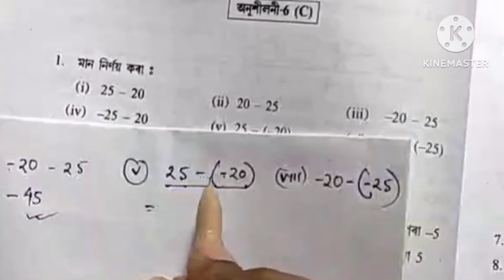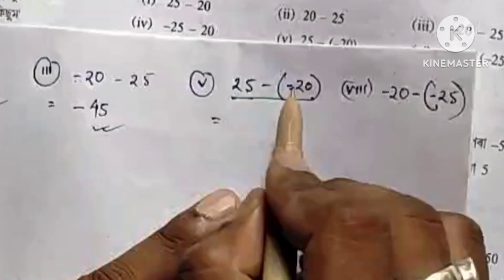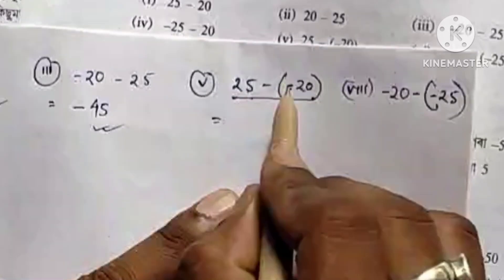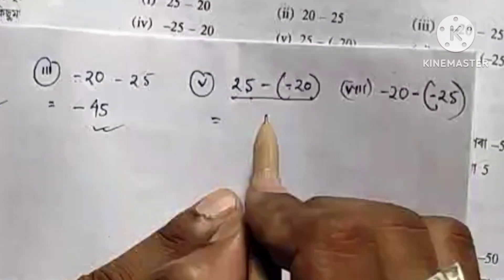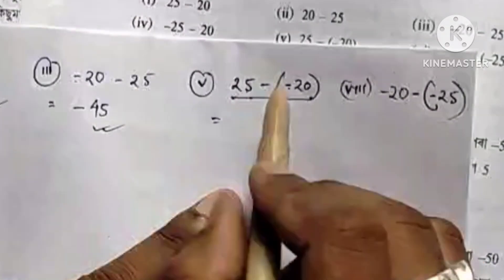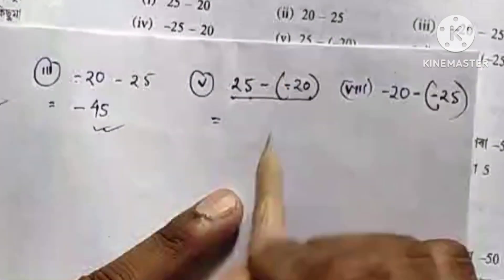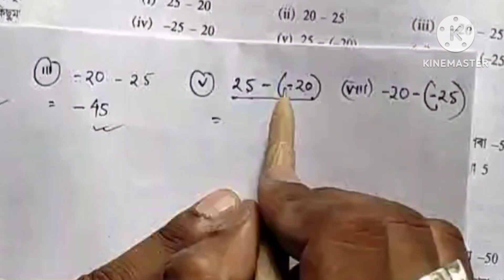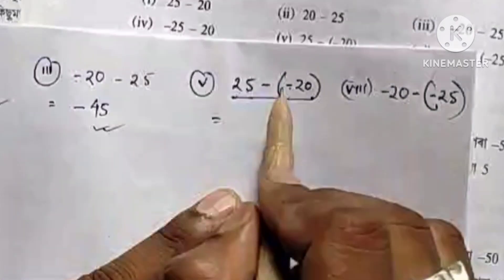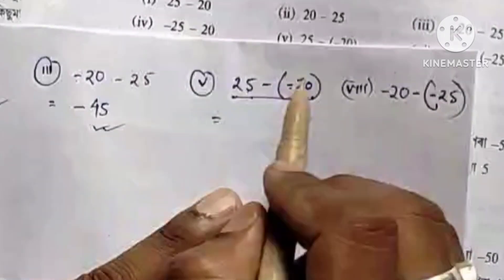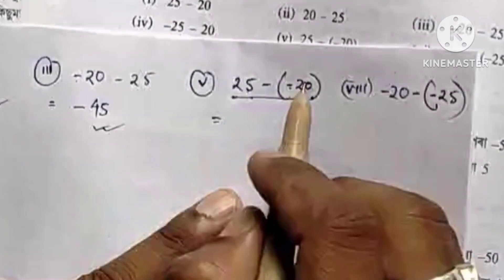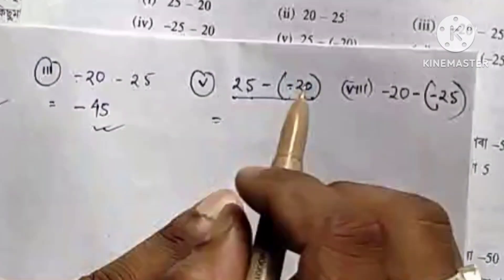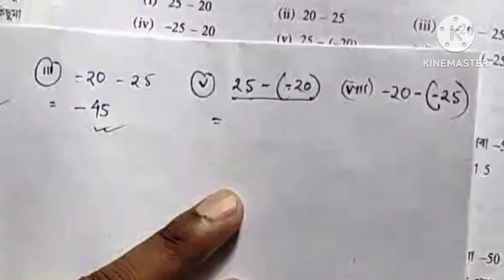If both are minus, then sin 2 becomes plus. Because minus and minus together make plus — that's the rule: minus times minus gives plus.